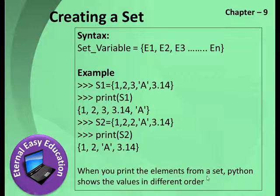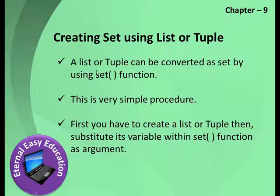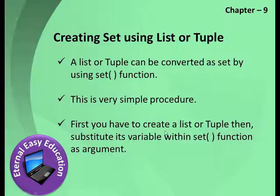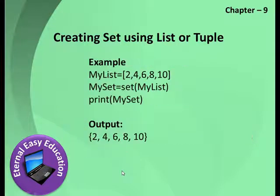When you print the elements from a set, Python shows the values in a different order because sets are unordered. A list or tuple can be converted to a set using the set() function. First, create a list or tuple, then pass its variable into the set() function as an argument. For example: my_list = [values], then my_set = set(my_list) — now it becomes a set.